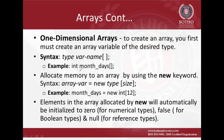For instance, here we have int monthDays. This creates a variable of type array but it doesn't allocate memory. To allocate memory, we write the variable name — which in this case is monthDays — then assign it to new with the same data type, which is int, and then the size. So we write monthDays = new int[12].